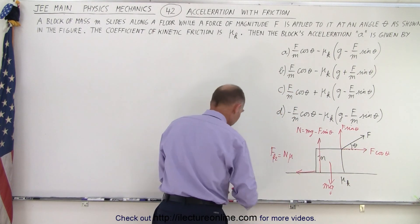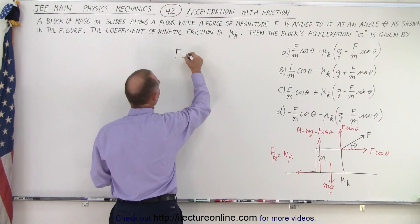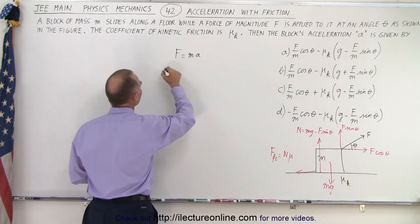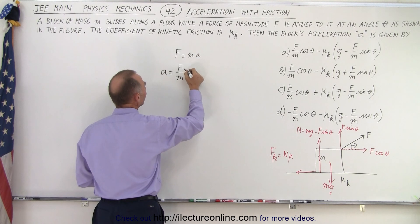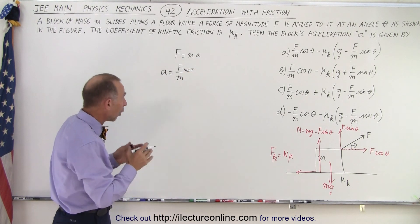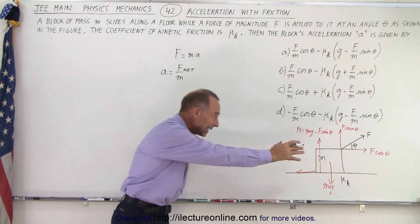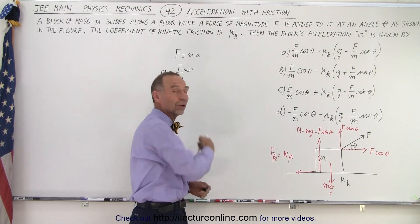Because then we set up the problem as follows. We know that F equals ma, which means that a equals F divided by m. Now let's write it as the net force because what we have to do here is take all the forces that are aiding in the acceleration as positive and all the forces that are opposing the acceleration as negative.